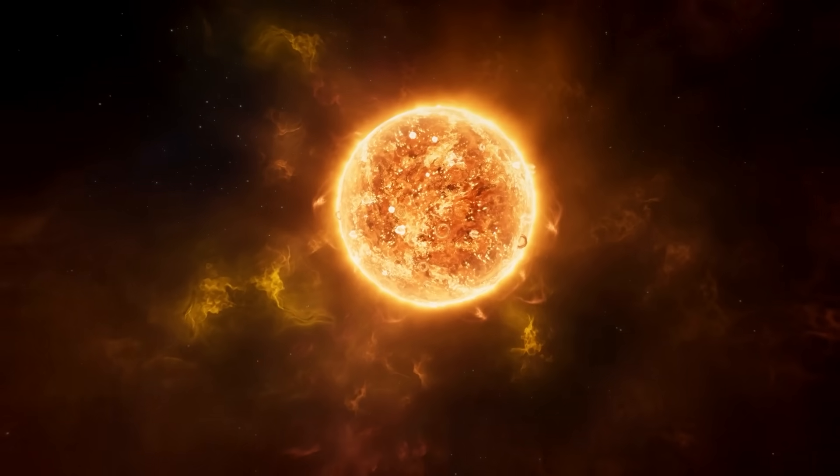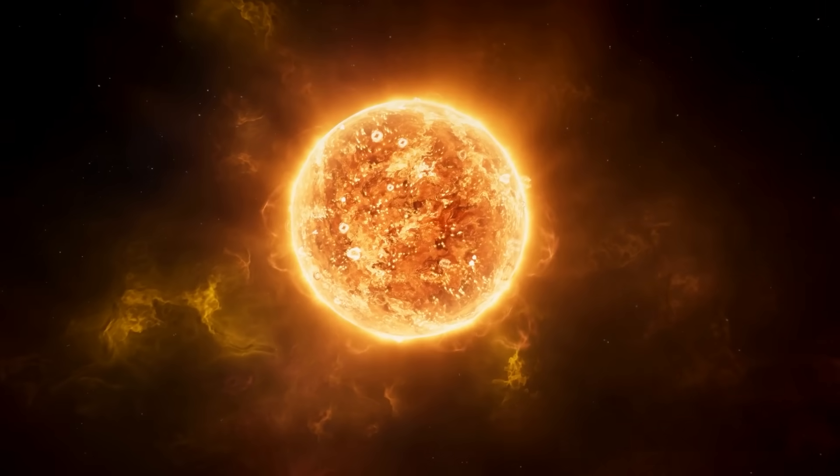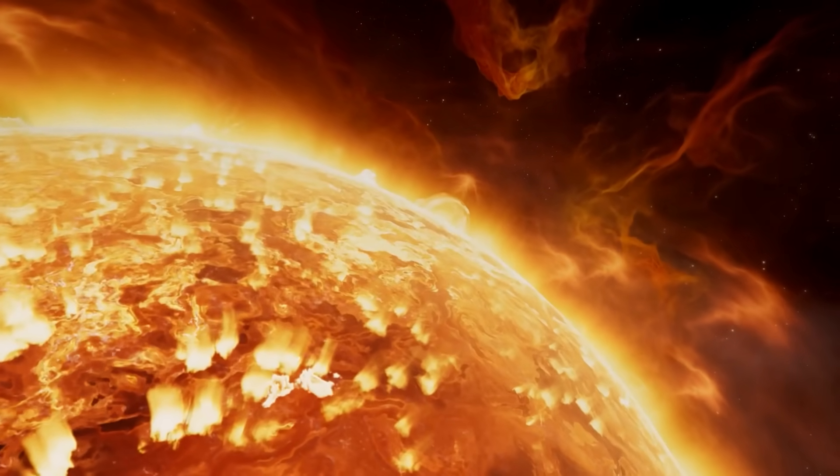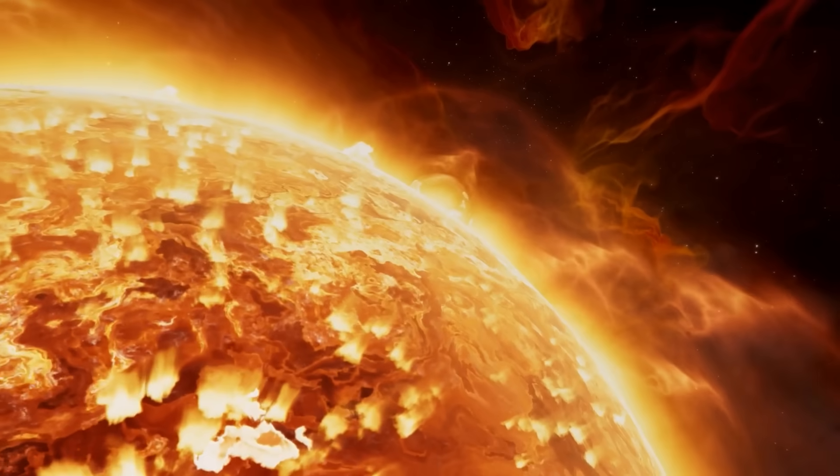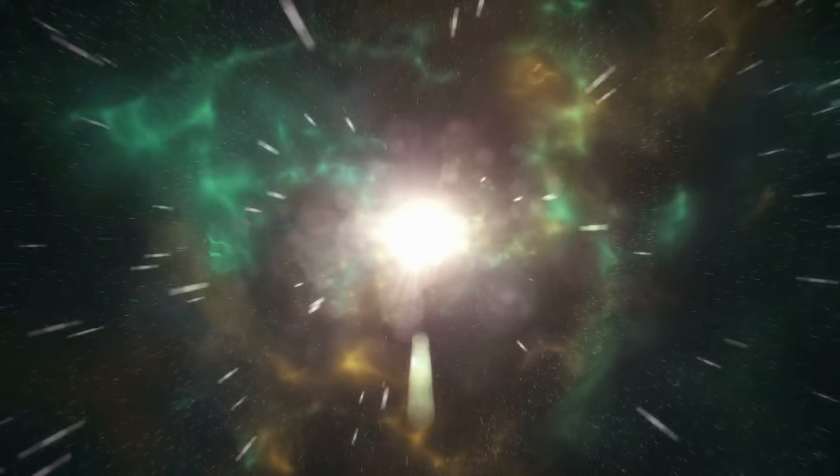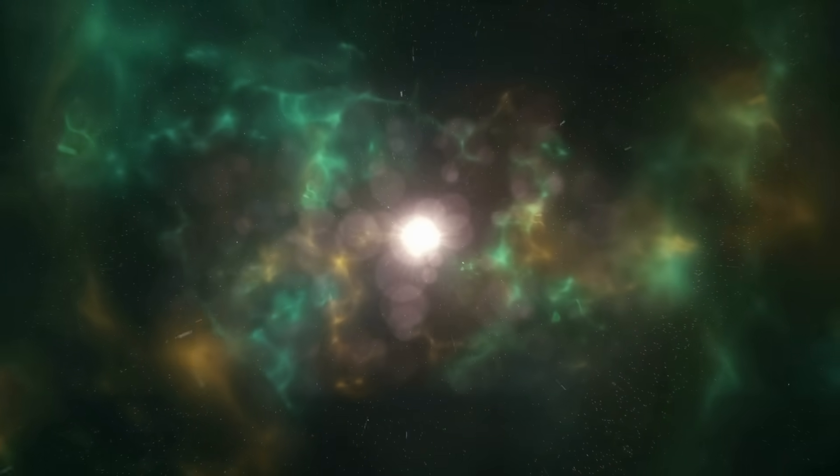As the first stars of the universe, Population 3 stars must have formed from the materials that were present immediately after the Big Bang. Therefore, they are thought to have consisted mainly of hydrogen, helium, and traces of lithium, since these are the primordial elements formed during the Big Bang's nucleosynthesis.